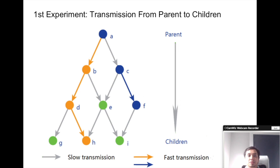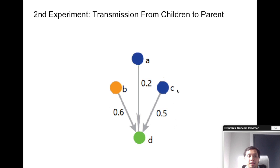Our first experiment is predicting transmission rate between parent and child relationship. In this example, the yellow nodes say that it has fast transmission, while the gray node is having a slower transmission rate.